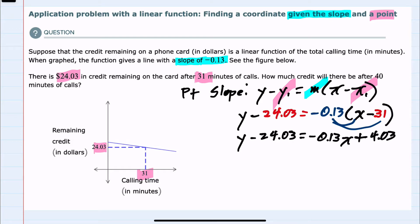We could then solve for y by adding the 24.03 to both sides, canceling on the left. We have y equals negative 0.13x and now a plus 28.06.